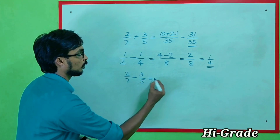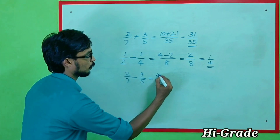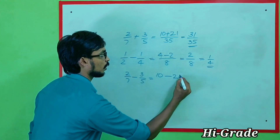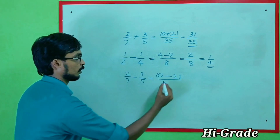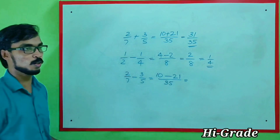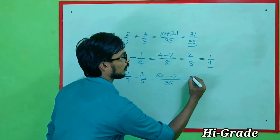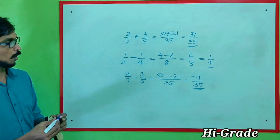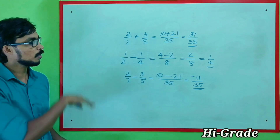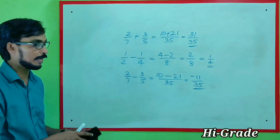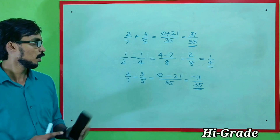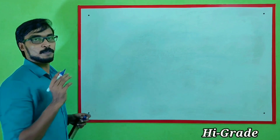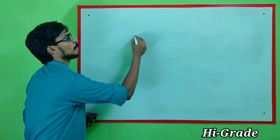2 by 8 — so we will change the formula. Now we will change 2 by 7. We will subtract. We will subtract — 2 into 5 is 10, minus 7 into 3 is 21.